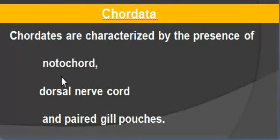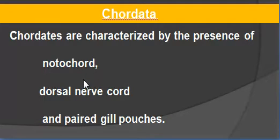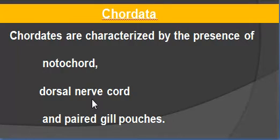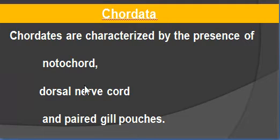If an animal has a notochord, the notochord is a supportive structure found at the back of the body in the embryonic stage. In advanced, higher chordates, the notochord is replaced by a backbone made up of bones. A dorsal nerve chord is also present at the dorsal part of the body in the embryonic stage. Later it develops into the brain and spinal cord. Notochord, dorsal nerve chord, and paired gill pouches are the characteristic features of a chordate.